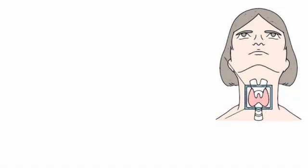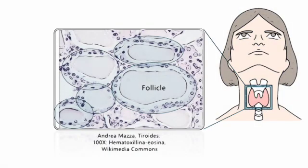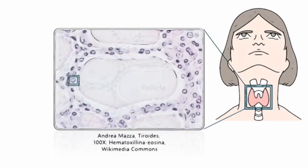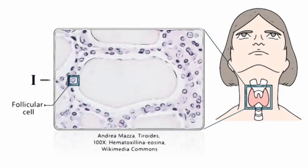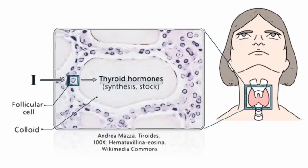The thyroid gland is made up of a collection of structures called follicles. Follicular cells take in iodine, synthesize thyroid hormones in a substance called colloid, and store them.